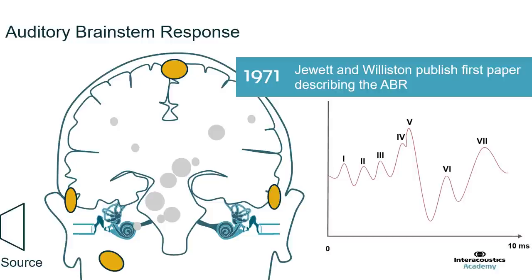In 1971, Jewett and Willstone were the first to publish a paper describing the auditory brainstem response. They described a series of seven waves, with wave five being the largest. Clinically today, we don't really talk about waves six and seven because they're variable and of little clinical significance. However, waves one to five are very much still in use, and when talking about threshold ABR, wave five is the most important wave to focus on.